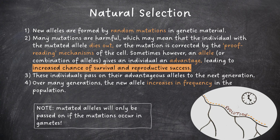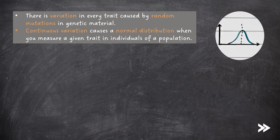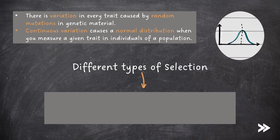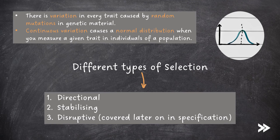Note that mutated alleles will only be passed on if the mutations occur in the gametes. There is variation in every trait caused by random mutations in genetic material. Continuous variation causes a normal distribution when you measure a given trait in individuals of a population. The specification wants us to know different types of selection. There are three different types: directional, stabilising and disruptive selection. This part of the specification covers directional and stabilising selection; disruptive selection will be covered later when we look at evolution and speciation.